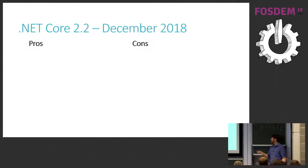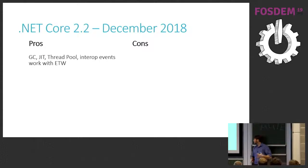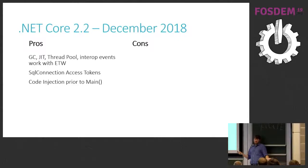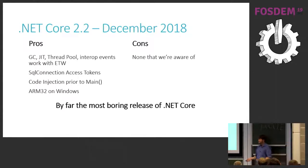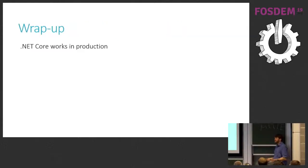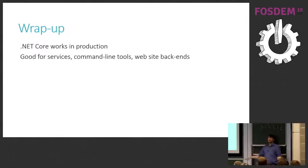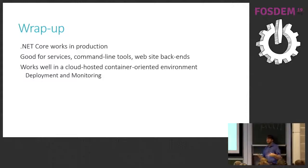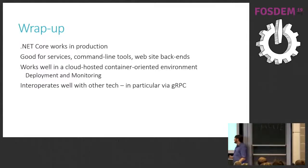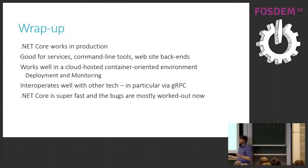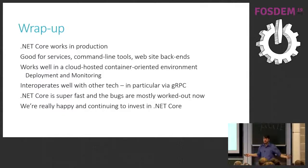.NET Core 2.2 came out in December. It has some Event Tracing for Windows features, SQL access tokens for Azure Active Directory, code injection prior to main, and ARM32 on Windows. It's basically the most boring release of .NET Core — it's .1 higher, kind of like this talk. To wrap up: .NET Core definitely works in production today. We're building our business around it. It works nicely with protobuf for multi-language interop, good for services, command line tools, and website backends. It works really well with Kubernetes — except the OOMkill issue with tight memory limits. Super fast, and the bugs have mostly been worked out.